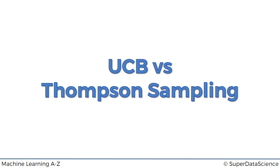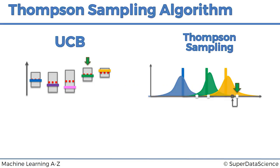Let's have a look at some of the pros and cons of each of the algorithms. There are lots of different advantages, disadvantages, and differences between the two, but we'll just highlight the main ones. Here we've got the two algorithms: on the left we've got the UCB with the image from the intuition tutorial, and on the right the Thompson sampling algorithm with its image.